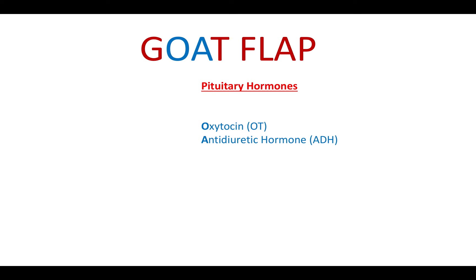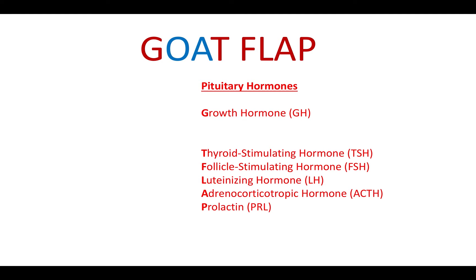Two of these are secreted from the posterior pituitary: oxytocin and antidiuretic hormone. They're actually synthesized in neurons of the hypothalamus and travel down axons into the posterior pituitary, where they're then released. That's different from the anterior pituitary, where hormones are both synthesized and released by cells within the anterior pituitary itself.